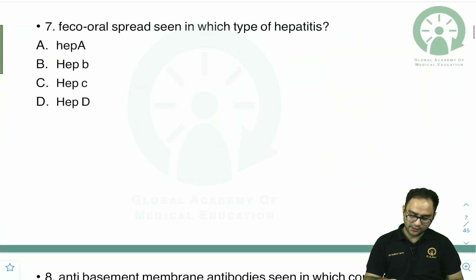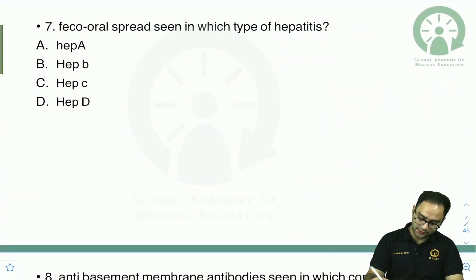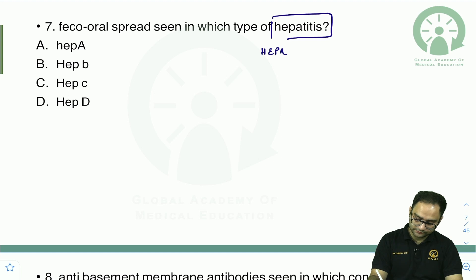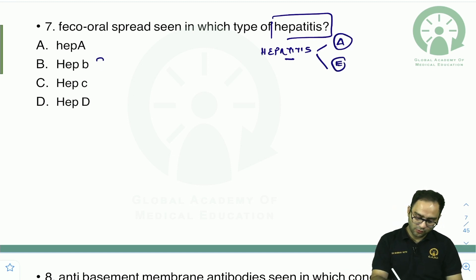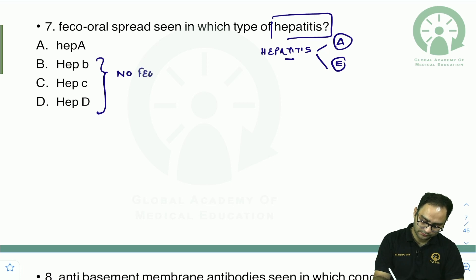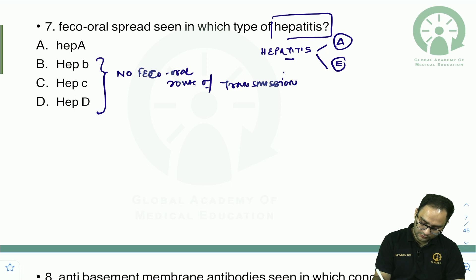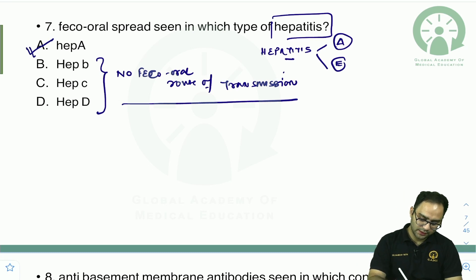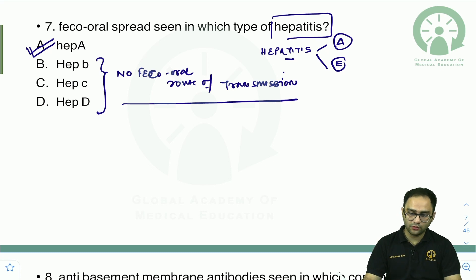Regarding hepatitis: feco-oral spread is seen in two types — Hepatitis A and Hepatitis E. The rest are mostly transmitted by other routes and do not have a feco-oral route of transmission.